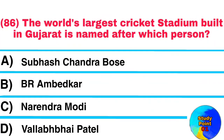Question No. 86. The world's largest cricket stadium built in Gujarat is named after which person? Answer: Narendra Modi.